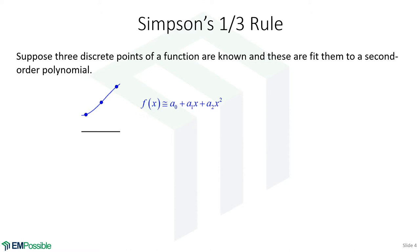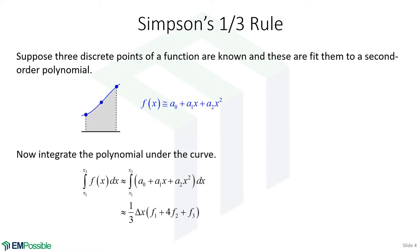Now we have an analytical expression for that function within those three points. We could simply integrate that polynomial to estimate the area under that function within those three points. And when we do that, here's the equation we end up with, with a 1/3 sitting out here, Simpson's 1/3 rule.